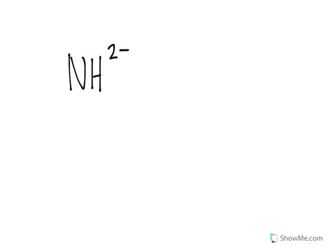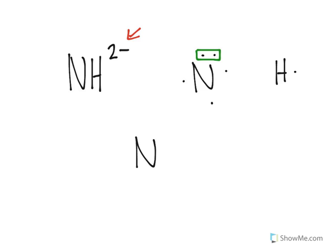Let's look at this ion: NH with a two-minus charge. There are two atoms — nitrogen has a lone pair on top, and then there's a hydrogen with one dot. If it has a two-minus charge, do I add two dots or remove two dots? Let's go ahead and connect the nitrogen and hydrogen first and figure that out in a second.